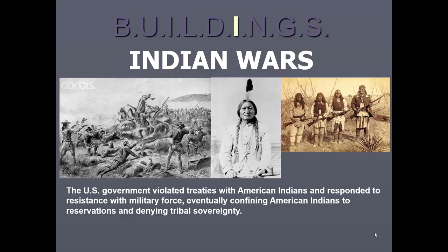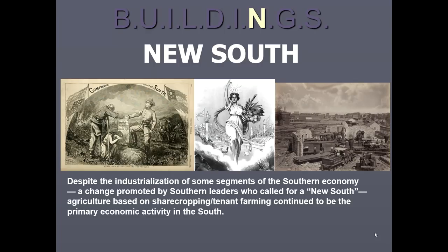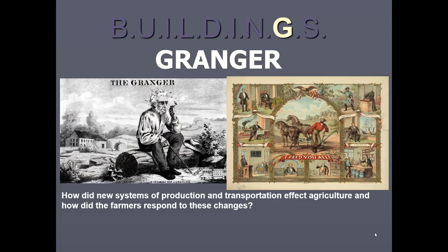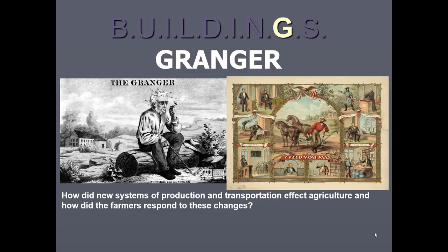The second I in BUILDINGS is for Indian Wars — covered in Chapter 16 — which is the interaction between Native Americans and the American government, along with industries such as mining, ranching, and farming. The N is for the New South: after the Civil War, the South had to reinvent itself, increasing industrialization and promoting education, though Southern Democrats remained in control. The G is for Grangers — I'll cover the plight of the farmers in the next video, including how they organized and formed their own political party, reshaping the Democratic Party in 1896.